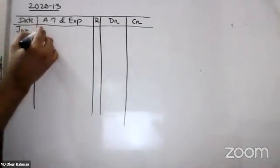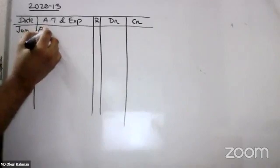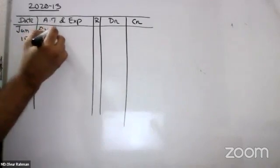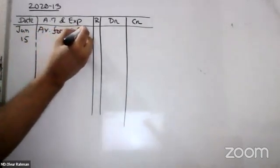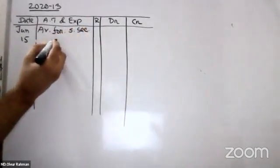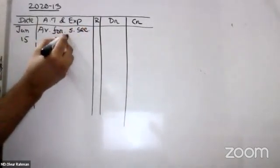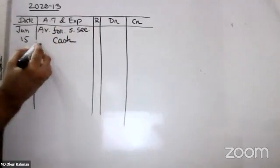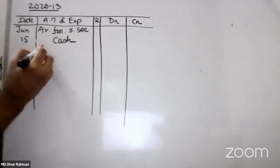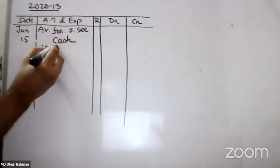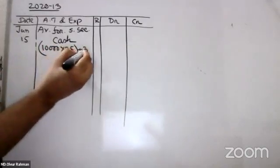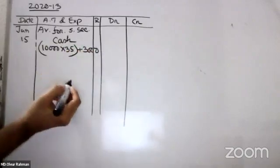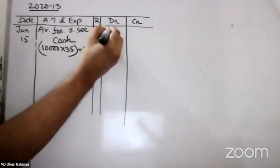We are working on the available-for-sale security. Debit available-for-sale security, credit cash. We are collecting one billion dollars.